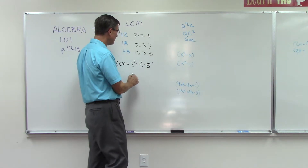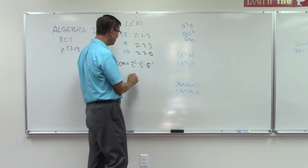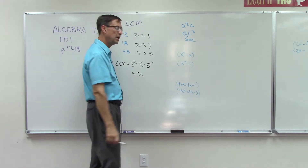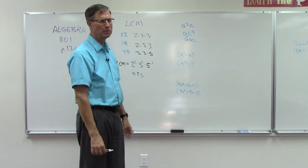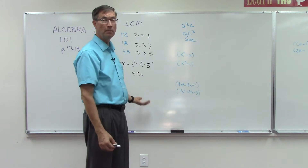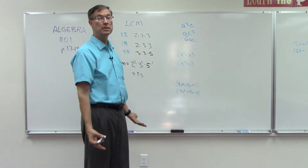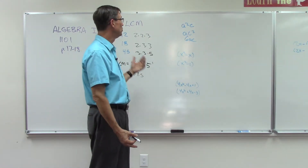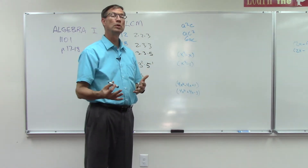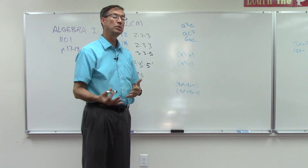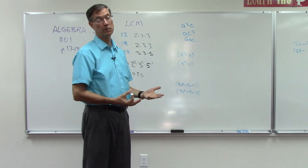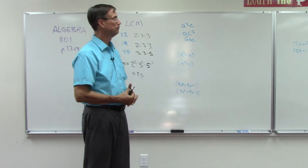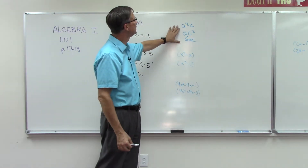To get the answer, we multiply 4 times 9 times 5, which gives the least common multiple. If we were doing this with fractions, that number would become your least common denominator for those fractions.